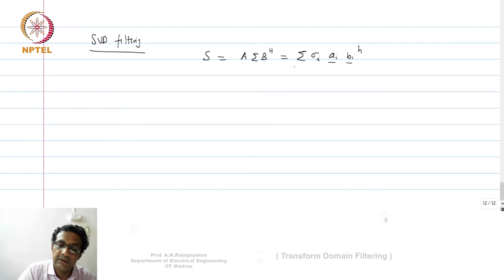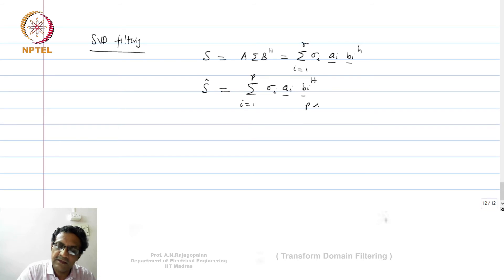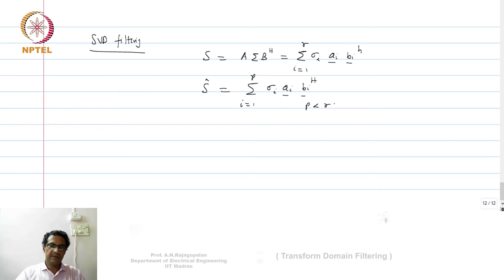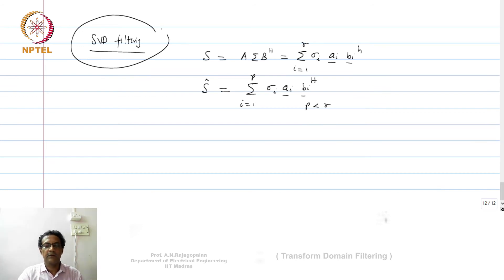In SVD filtering, if S = Σᵢ σᵢ aᵢ bᵢ-hermitian and it has r non-zero singular values, then to reconstruct S exactly you sum from i=1 to r. To filter S, you create Ŝ by summing only from i=1 to p, where p is less than r. You ignore the higher singular values, believing they probably contain noisy basis components, and limit the contribution to the summation from i=1 to p. So SVD can also be used for noise filtering.